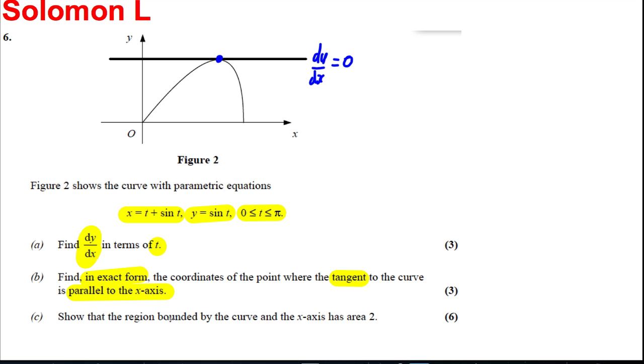And lastly, show that the area bounded by the curve and the x-axis is area 2. What they're asking us to show is show that the following area is equal to 2 units squared. Okay, right, let's give it a go.